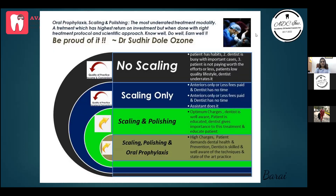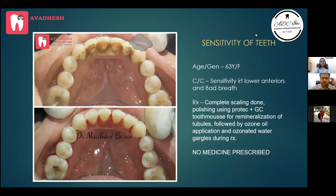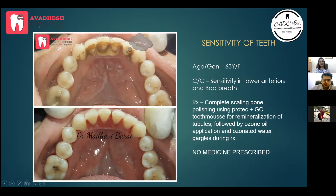First case: sensitivity of teeth. Female patient, 63 years old, sensitivity in lower anteriors and bad breath. On checkup we found she needed complete scaling plus two cavities treated. We did complete scaling, used GC Tooth Mousse for remineralization, followed by ozone oil application. Immediate post-op shows no bleeding lines — no metronidazole or any medication was given after scaling. Patient had no sensitivity four months later.